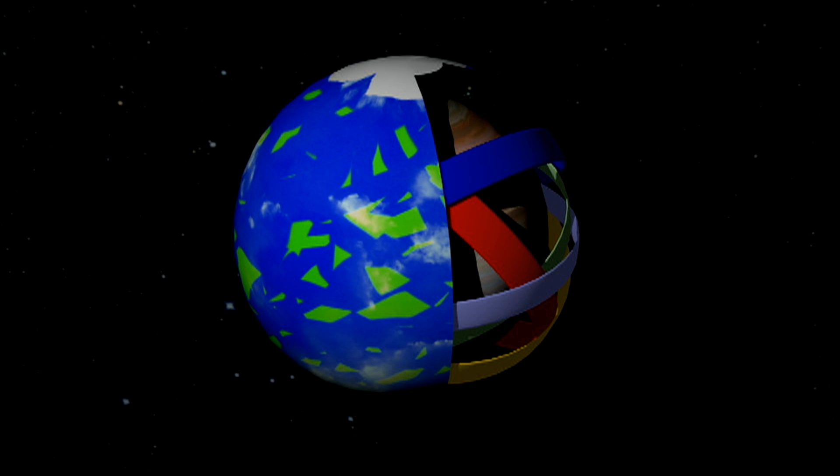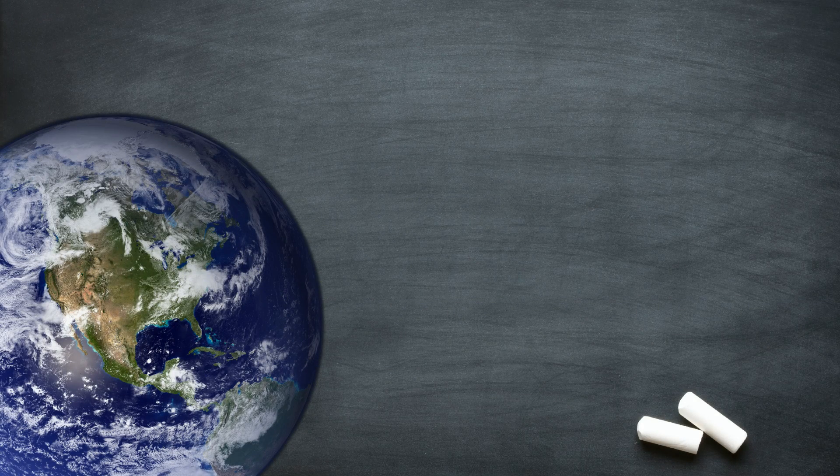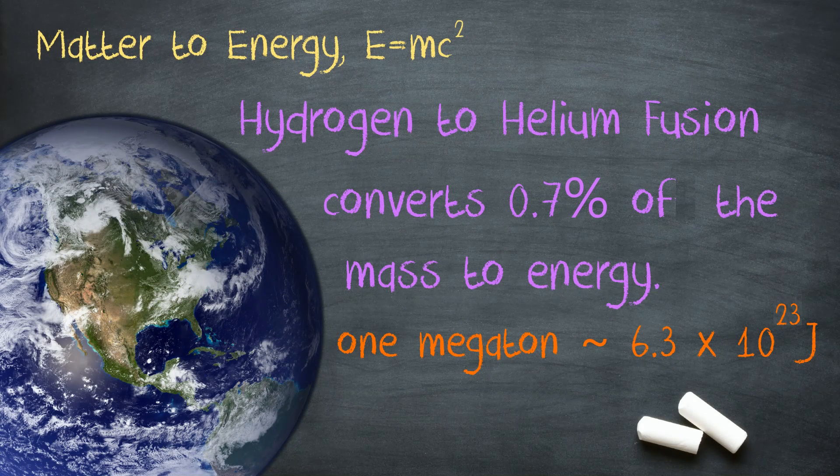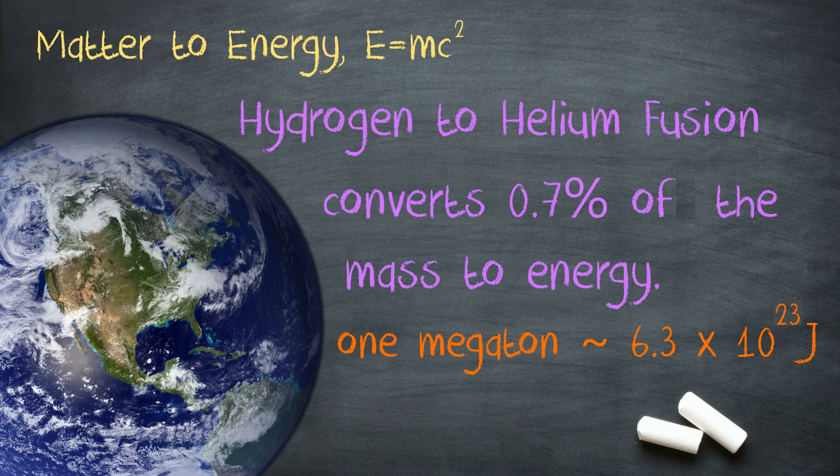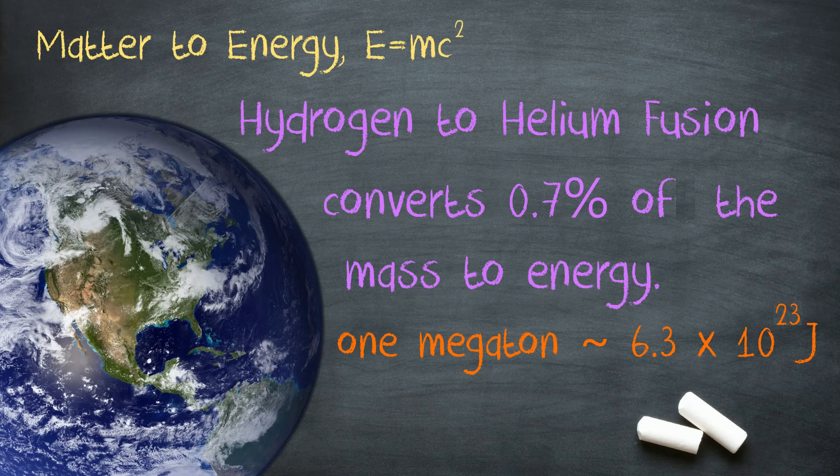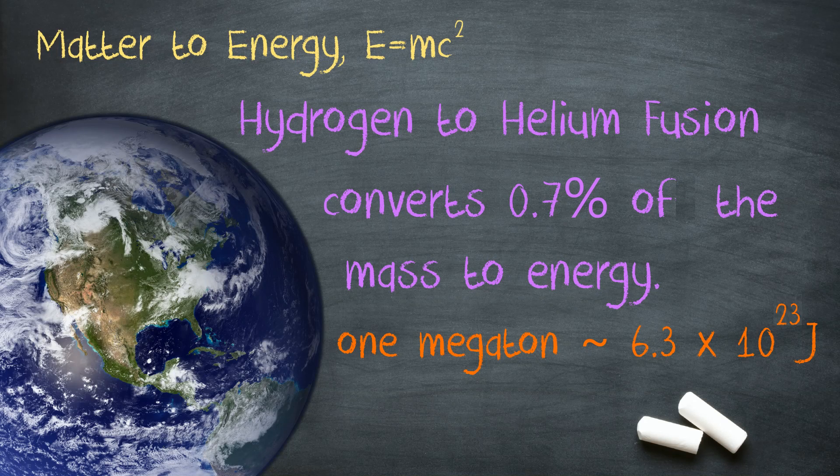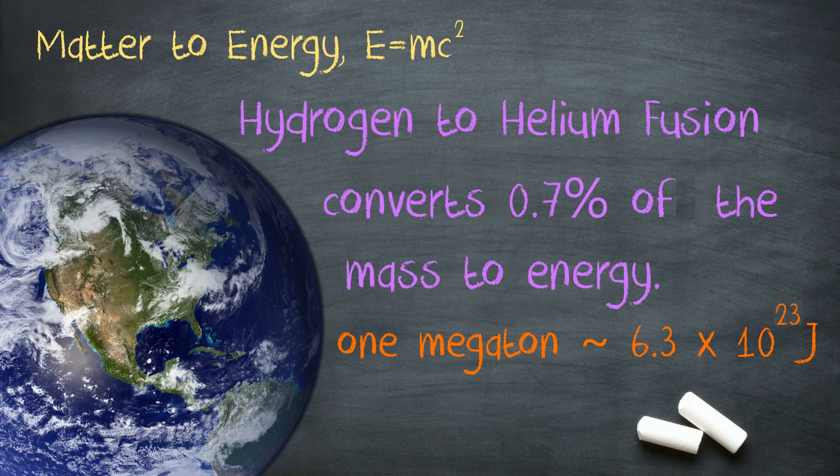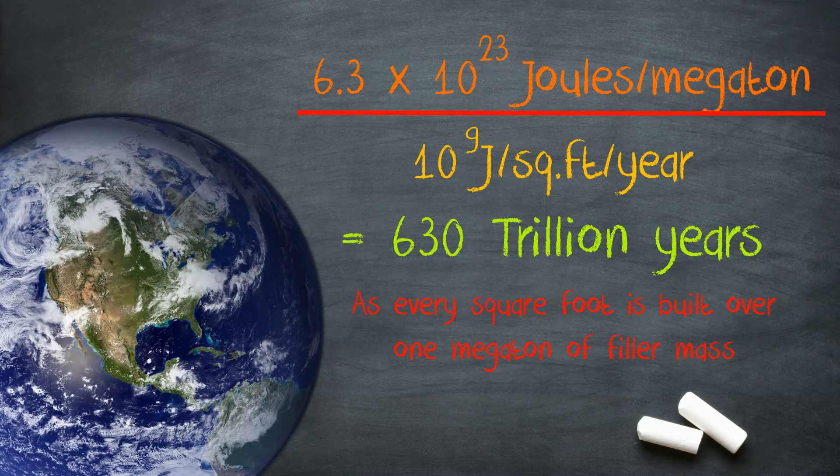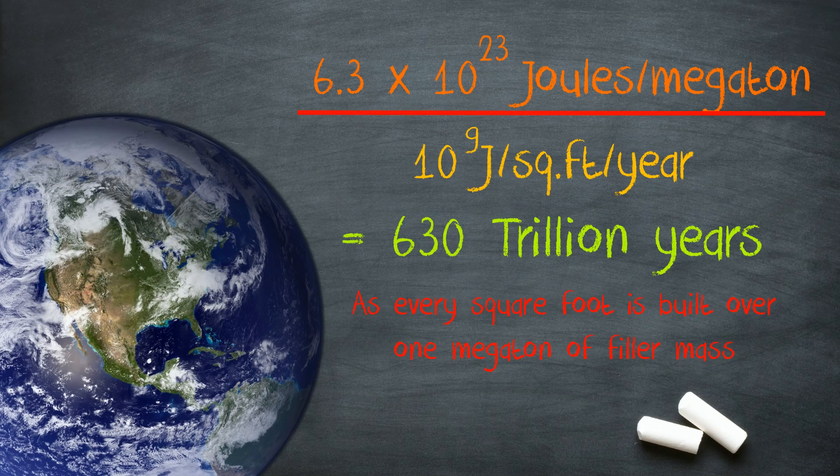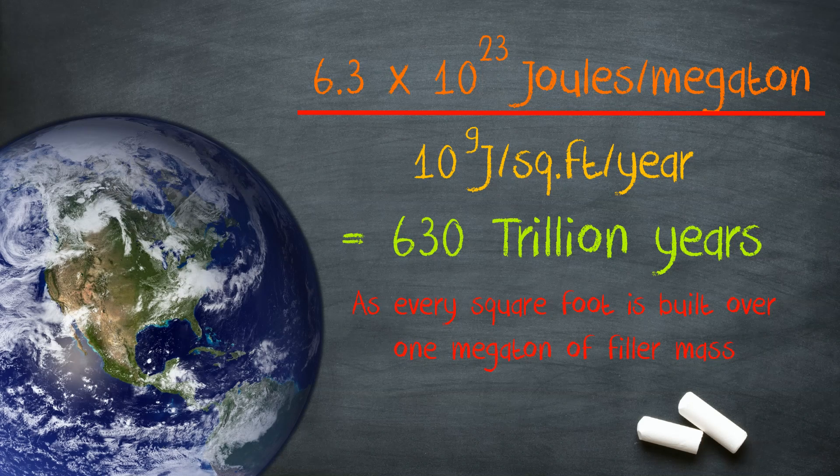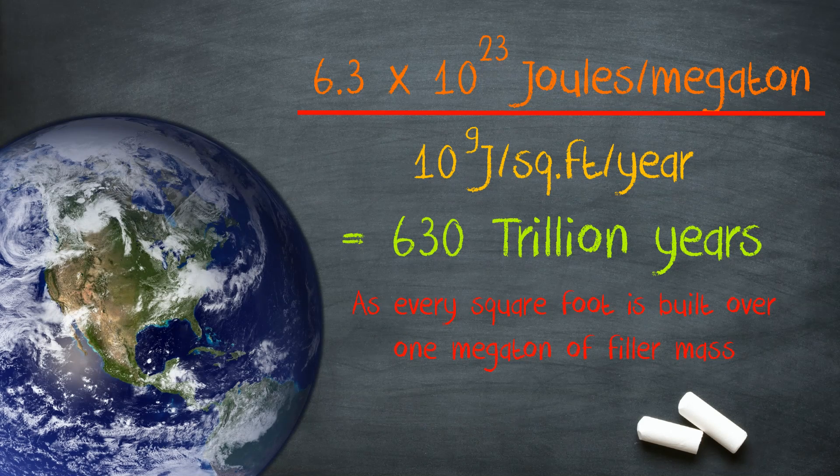I've mentioned earlier that you need a megaton of matter per square foot of living area on these regardless of their size, and to put that in terms of energy, if you started off with a filler made entirely of hydrogen and converted it to helium you get about 6.3 times 10 to the 23rd joules of energy per megaton. Now the average solar illumination on Earth is about 30 watts per square foot, or about a billion joules per year per square foot, so that means your filler mass would provide fusion fuel to run your world for about 600 trillion years, more than 100,000 times longer than our sun has left to its life.